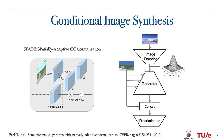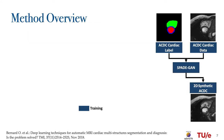Moreover, the combination of an image encoder and the generator can be used to replace the input noise and transfer the global style of the input image in a variational autoencoder setup.